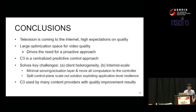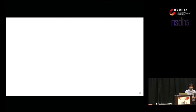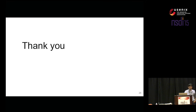To conclude: television is coming to the internet, bringing very high expectations on quality. The large optimization space for video quality is driving a more proactive approach than the reactive adaptive algorithms used in the industry so far. C3 is a centralized predictive control approach that solves device heterogeneity and internet scale challenges, and has been used by multiple content providers with significant quality improvements. Thank you everyone. We are definitely looking for people to join us at Conviva.